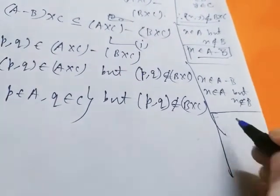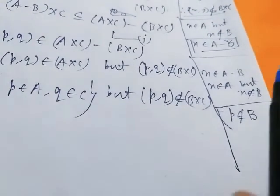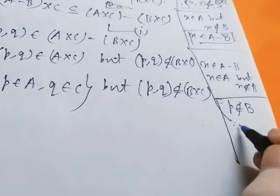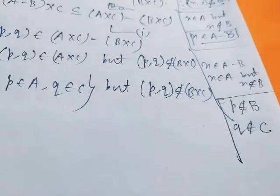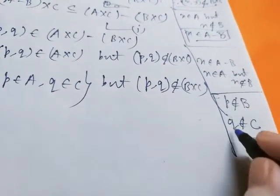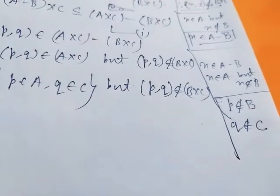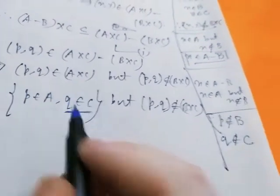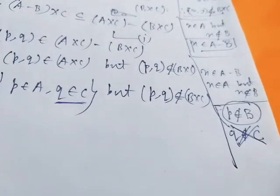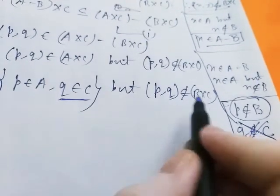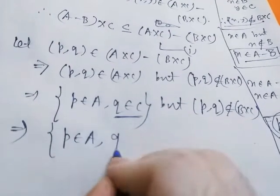We have already p belongs to A and q belongs to C. Since ordered pair (p, q) does not belong to B cross C, we have three options: either p does not belong to B, or q does not belong to C, or both p does not belong to B and q does not belong to C. But we already have q belongs to C, so the second and third options are not possible. Therefore p does not belong to B.